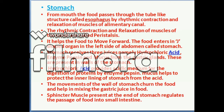The food enters a J-shaped organ on the left side of the abdomen called the stomach. The stomach receives three juices: hydrochloric acid, enzyme pepsin, and mucus from the gastric glands, which are present in the walls of the stomach. Hydrochloric acid provides an acidic medium for the digestion of food by the enzyme pepsin.